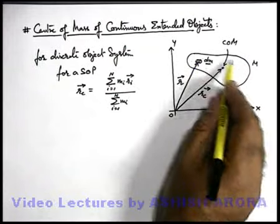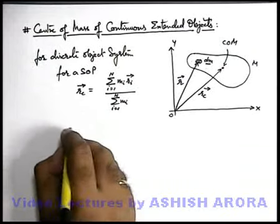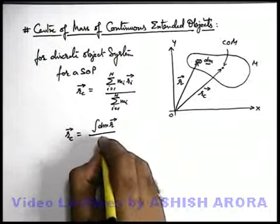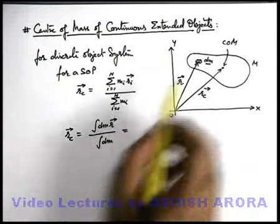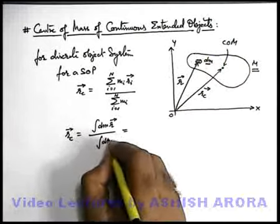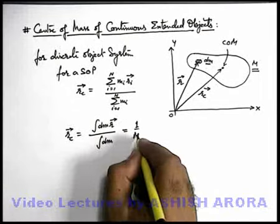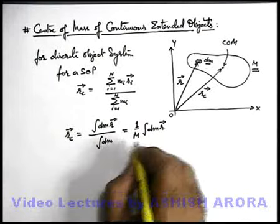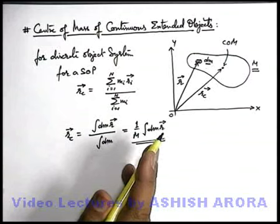In the case of a continuous body, this summation will be replaced by the sign of integration. So the position vector of center of mass can be written as the integration of dm * r_vector, divided by the sum of all masses, which becomes the integration of dm. The integration of dm is the sum of all dm's for the whole body, which equals capital M — the total mass of the body. So this relation becomes: r_c = (1/M) * ∫ r dm. This is the relation used to find the position vector of center of mass of a continuous extended object.